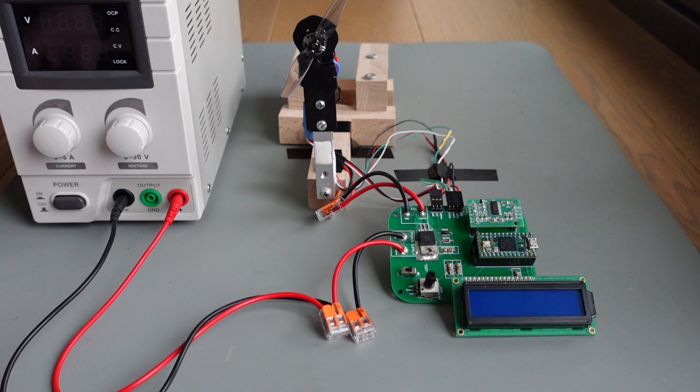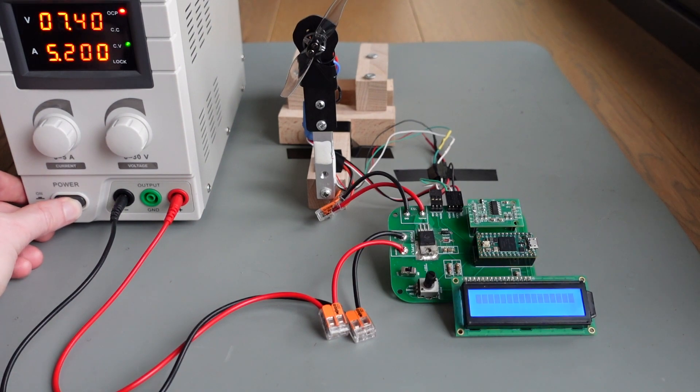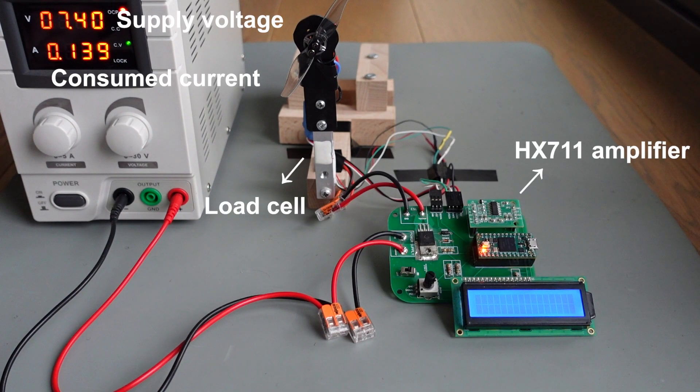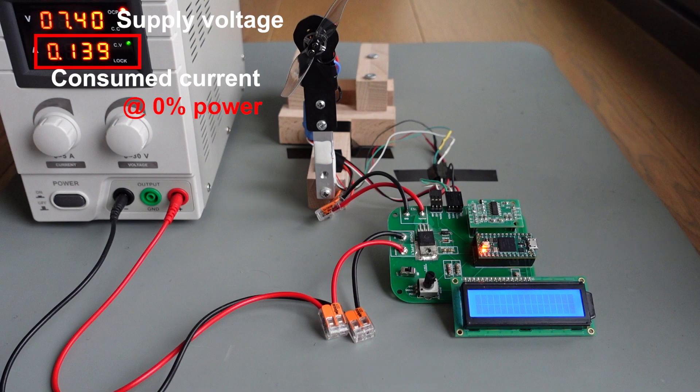We will test our motor, propeller and ESC combination using a custom-made test bench, which is powered by a power supply to control the supply voltage and to easily monitor the consumed current. A load cell with an amplifier, a TNC for the motor control and an LCD display to monitor the thrust and the throttle completes the setup. Notice that our setup already consumes some current, even though the motor has not yet started.